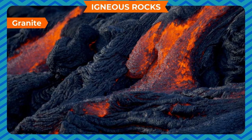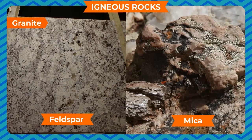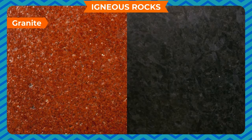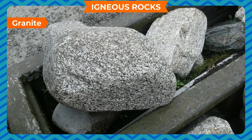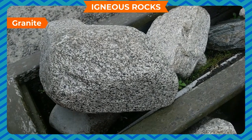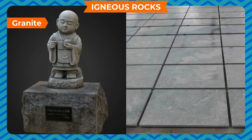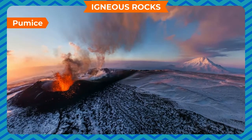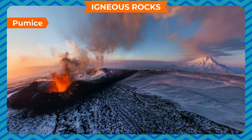Granite rocks are formed by the slow cooling of lava on the Earth's surface. Three main minerals — quartz, mica, and feldspar — are present in it. It is found in different colors like gray, pink, white, black, or red, depending on the quantity of feldspar available. As it is a hard rock, it is used in the construction of buildings, roads, statues, and flooring tiles. It is the most common igneous rock on the Earth's surface.